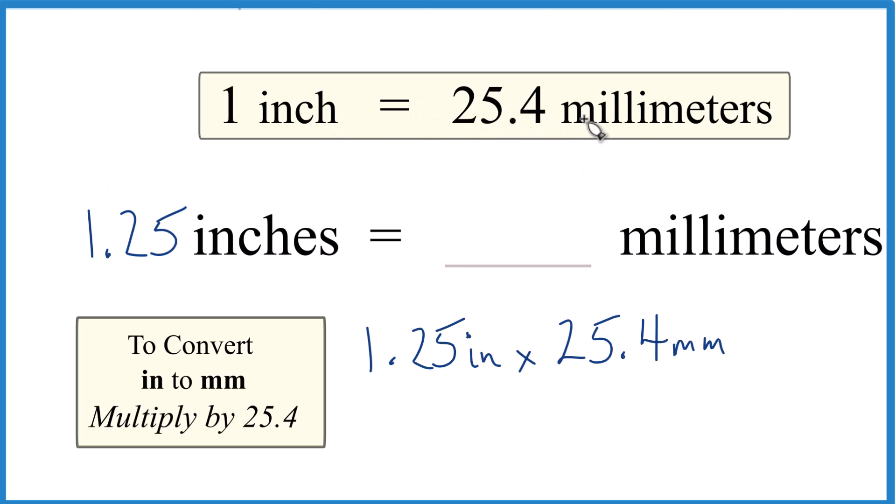Note that it's 25.4 millimeters in one inch per inch, so you could just put it over inches like this. Now when we multiply, we have inches on the top and the bottom that cancel out, and we end up with millimeters.